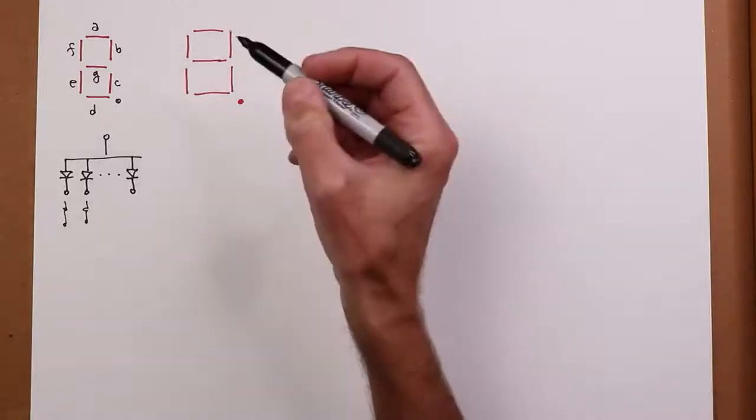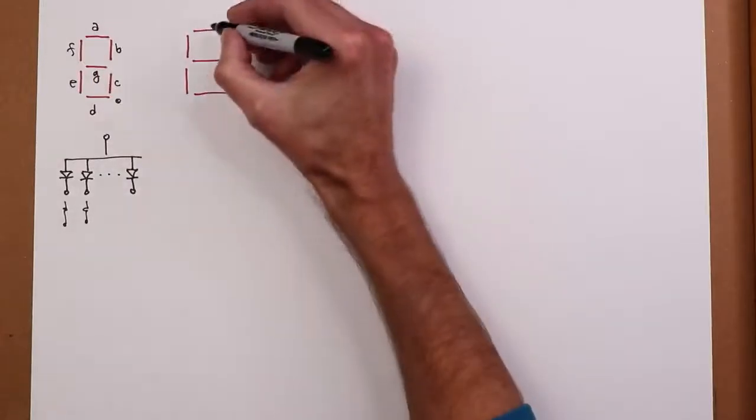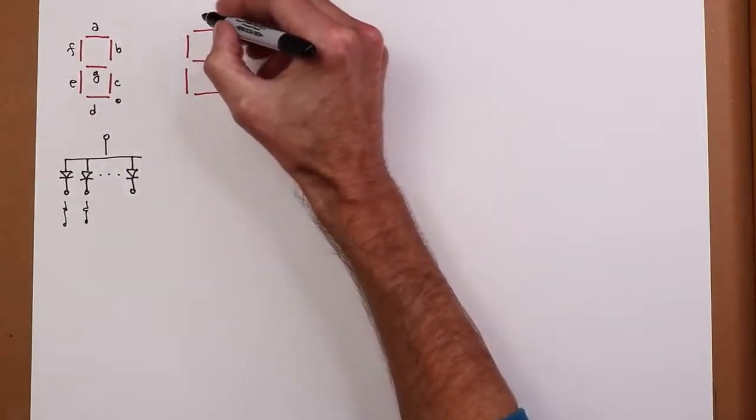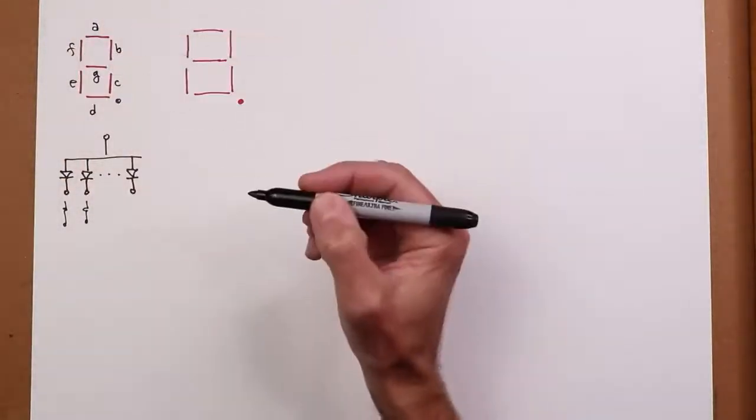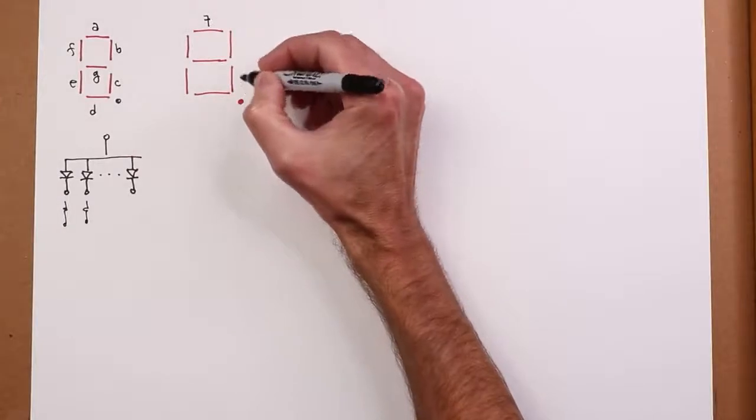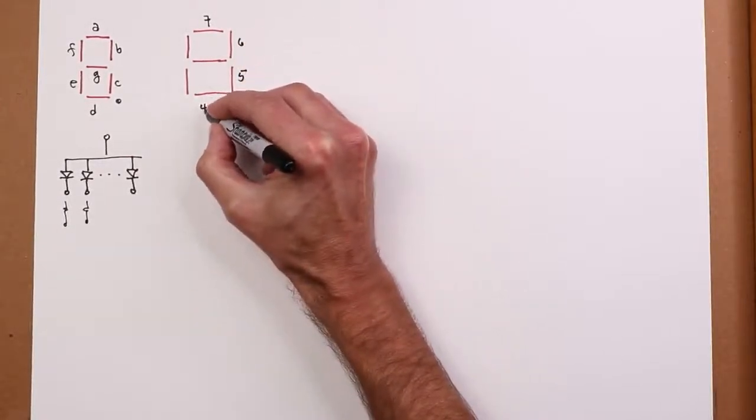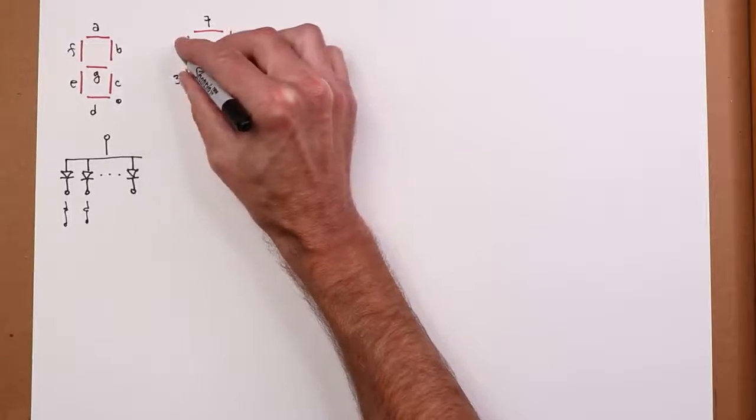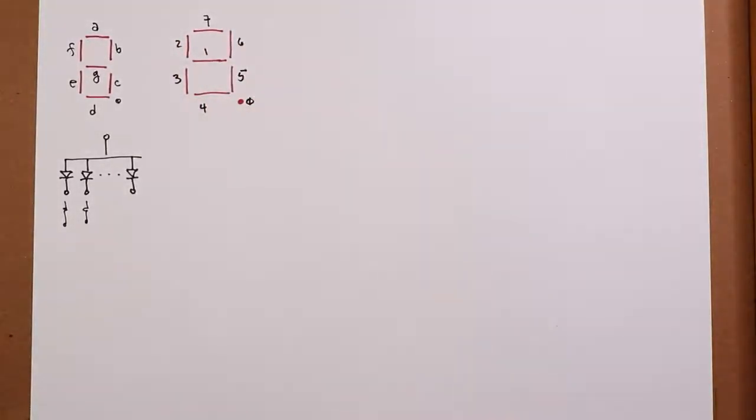Well, one way to do it, and there's nothing magic about this, but just to be consistent with the way they're lettered, we could just say, well, I'll go from most significant bit down to least significant bit going around ABC. So this would be bit 7, bit 6, bit 5, 4, 3, 2, 1, and then bit 0 would be the decimal point if we're going to use it.